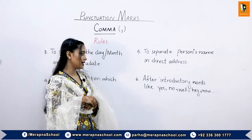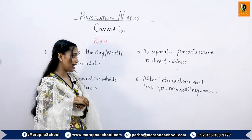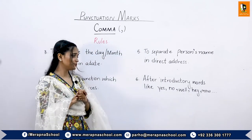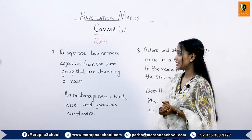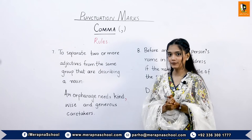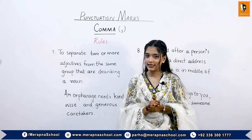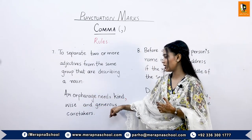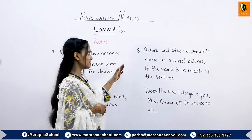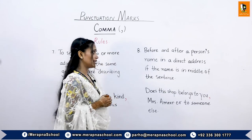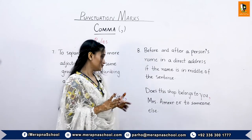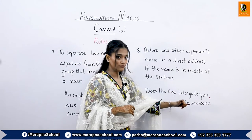The sixth rule is after introductory words like yes, no, well, hey, now, etc. For example: 'Hey, this bike is mine.' The seventh rule is to separate two or more adjectives from the same group describing a noun — for example: 'An orphanage needs kind, wise, and generous caretakers.' The eighth and last rule is before and after a person's name in direct address if the name is in the middle of the sentence — for example: 'Does this shop belong to you, Mrs. Amir, or to someone else?'